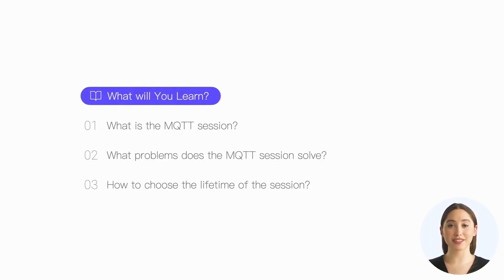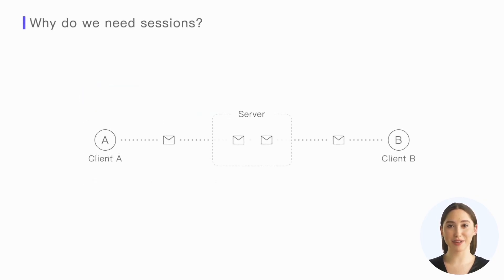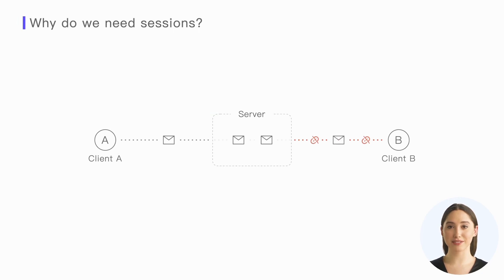Let's look at the following scenario to illustrate the role of the session better. Client A sends messages to the server, and then the server forwards them to client B. If the network connection between the server and client B is disconnected, both the messages being transmitted in the network and the messages awaiting delivery in the server will be lost.